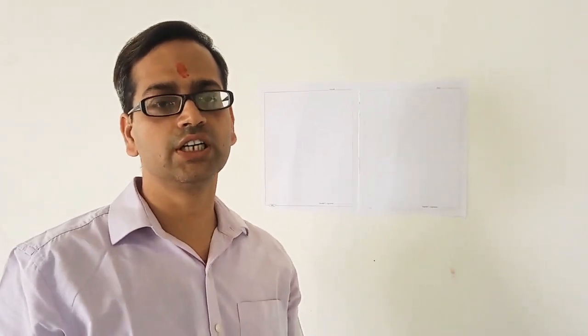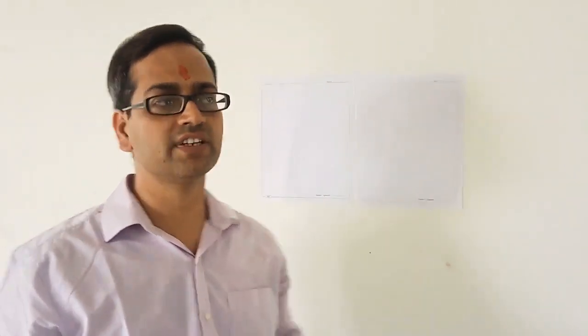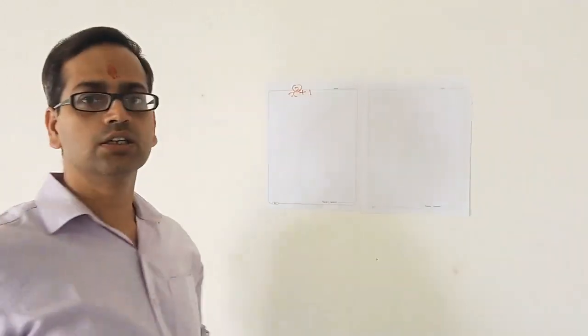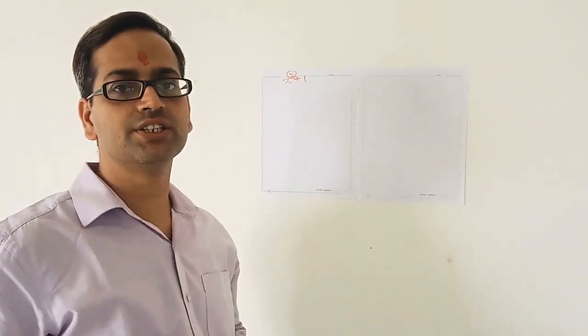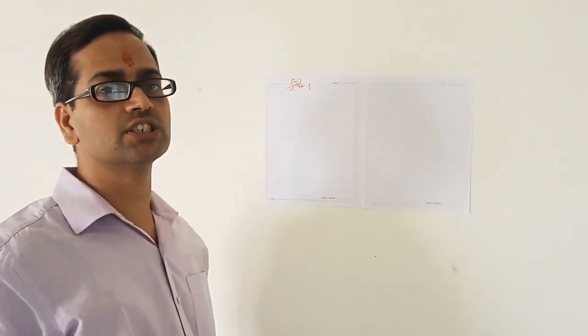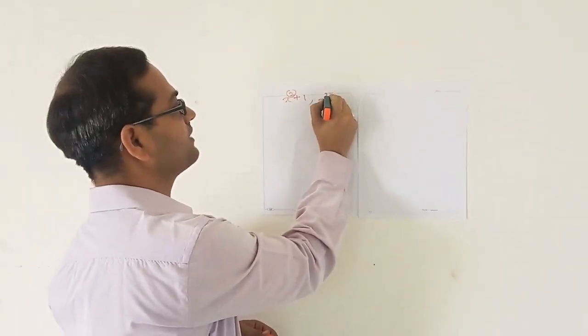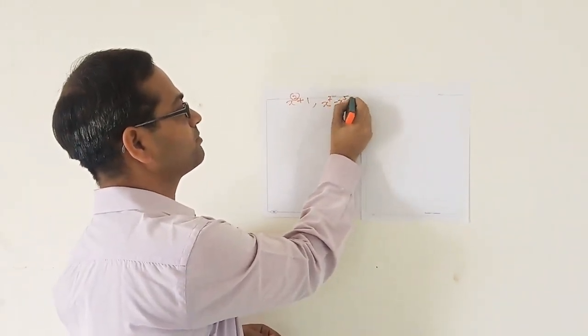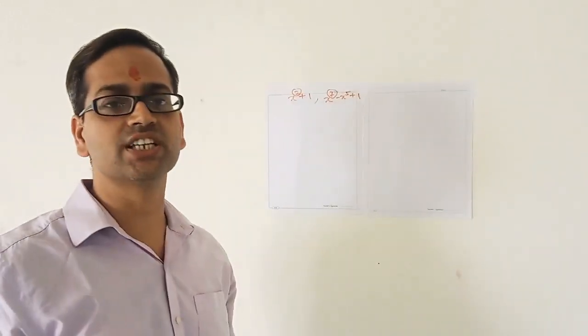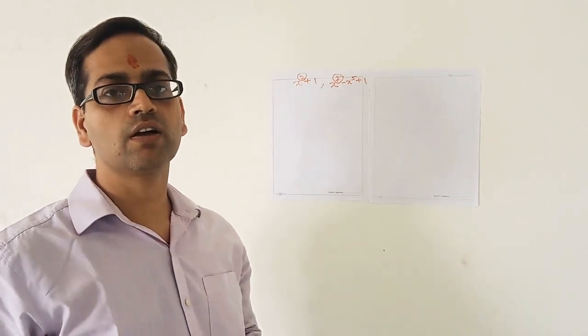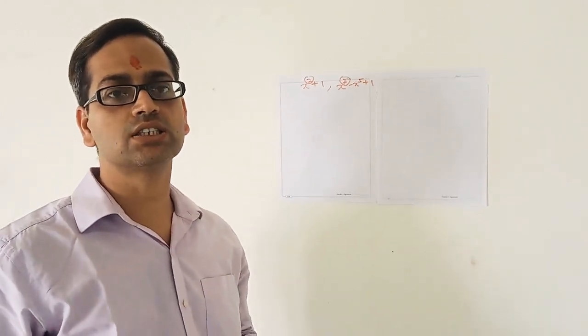Let's start with polynomials today. You are all aware of the degree of a polynomial. Suppose I write the polynomial x² + 1 — the power of x here is 2, so the degree of this polynomial is 2. Similarly, if I have x⁷ - x⁵ + 1, the highest power being 7, the degree of this polynomial is 7.